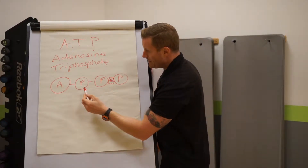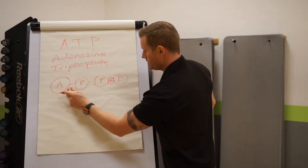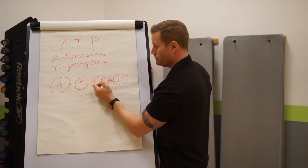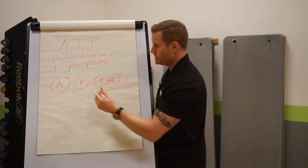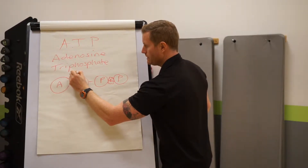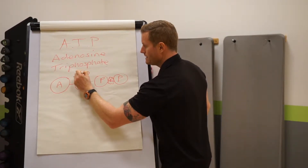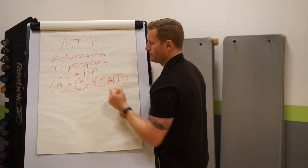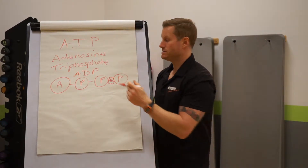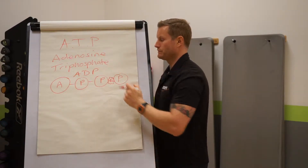Then what we're left with is adenosine and two phosphate groups. So that then becomes ADP, which is adenosine diphosphate.